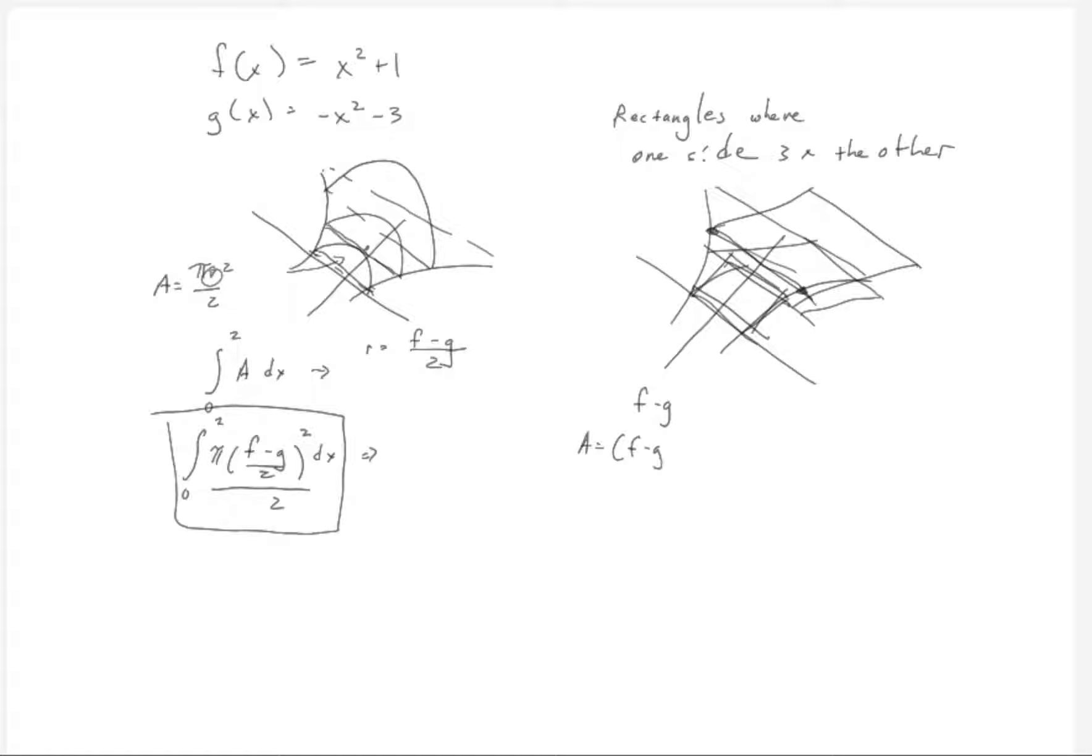We've got an area that is f minus g times three times f minus g, or the area equals 3(f minus g) squared. And then we're just adding up from 0 to 2, 3 times (f minus g) squared dx. Okay, so it's really, I mean insert whatever kind of geometry you want there, but that's the big idea.